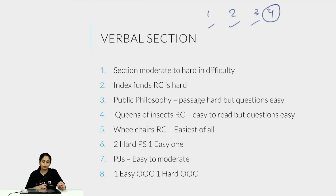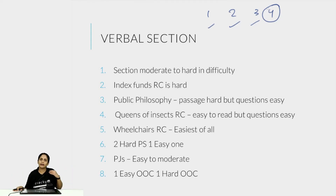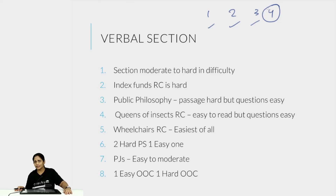The third RC, 'Queens of Insects,' was the scientific RC. It was easy to read, but with scientific RCs you have to think through all the aspects carefully. You have to be very exact with what can be inferred because in science there is no 'maybe' or 'probably' — you either know this for sure or you do not. So scientific RCs are easy to read but you have to be very exact in answering them.